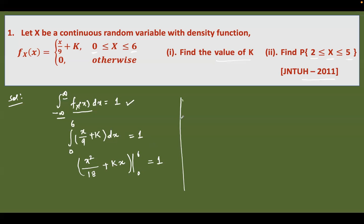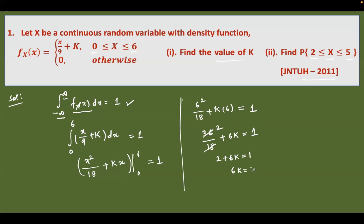Substituting the upper limit 6: it becomes 6²/18 + k·6. The lower limit is 0, so substituting 0 gives 0, which we omit. This gives 36/18 + 6k = 1, so 2 + 6k = 1. Then 6k = 1 − 2 = −1, so k = −1/6. This is the value of k.